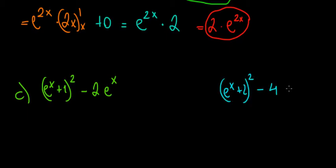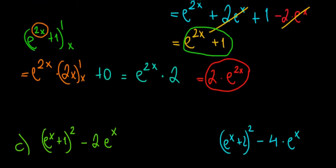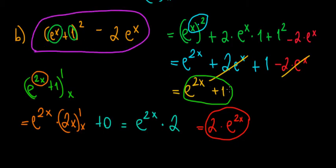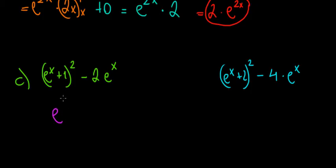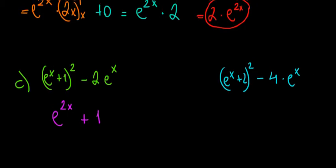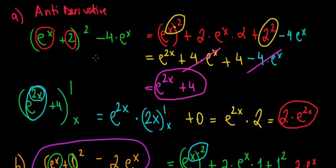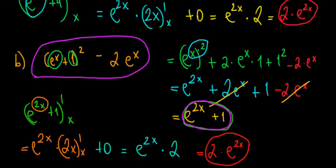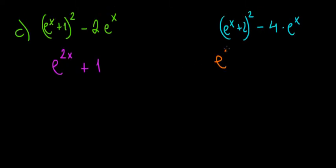We can use what we calculated previously. We already found that e to the power of x plus 1, squared, minus 2 times e to the power of x equals e to the power of 2x plus 1. And from part a, we found that the other expression, e to the power of x plus 2, squared, minus 4 times e to the power of x, equals e to the power of 2x plus 4.